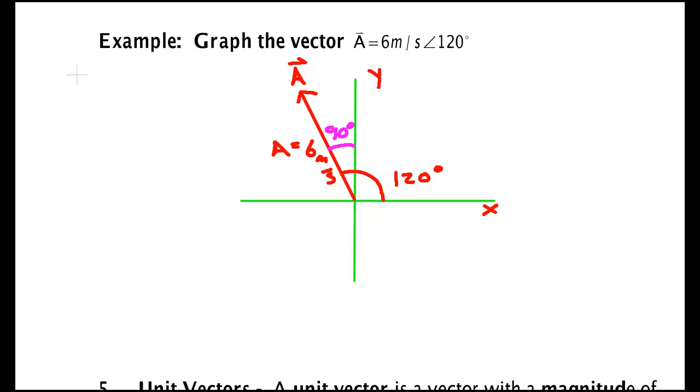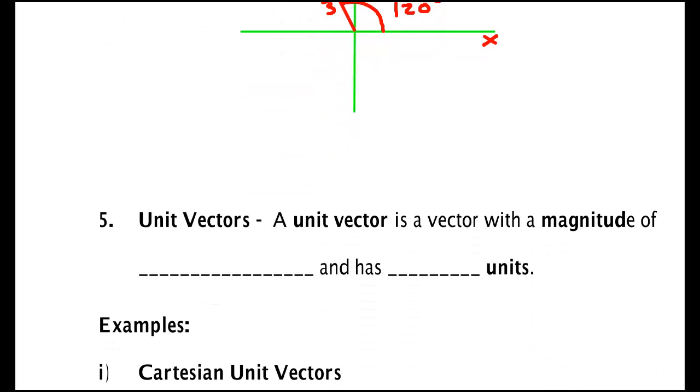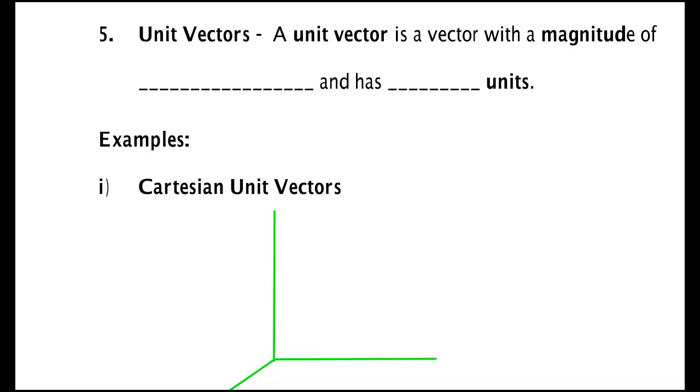Moving on to other things, some special vectors. There are some special vectors whose purpose is to help us find direction. These are known as unit vectors. A unit vector is a vector with a magnitude of one and has no units, so its only purpose is just to give direction.